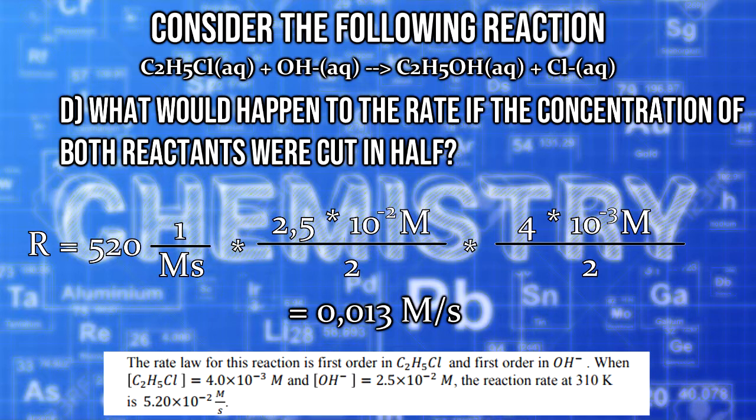The reaction rate decreases to a quarter when both concentrations of the reactants are cut in half. So at the end, we can say by only halving one concentration, the reaction rate decreases to a half. But by halving both concentrations, the reaction rate decreases to a quarter. That's because they are both first order reactions.